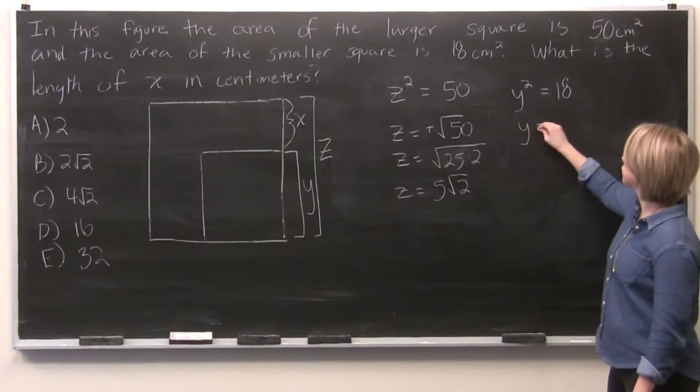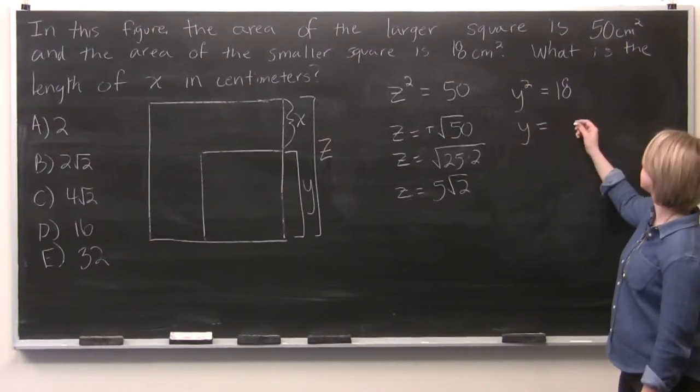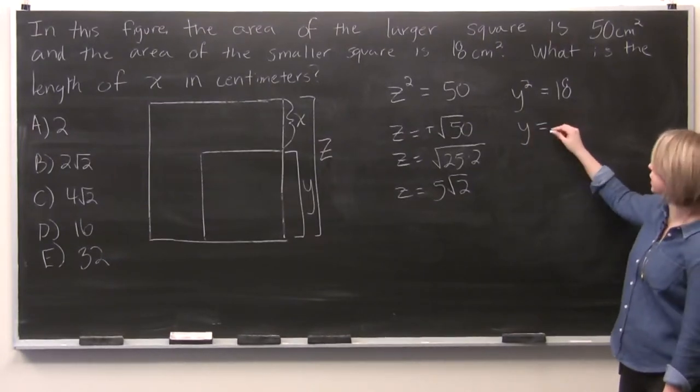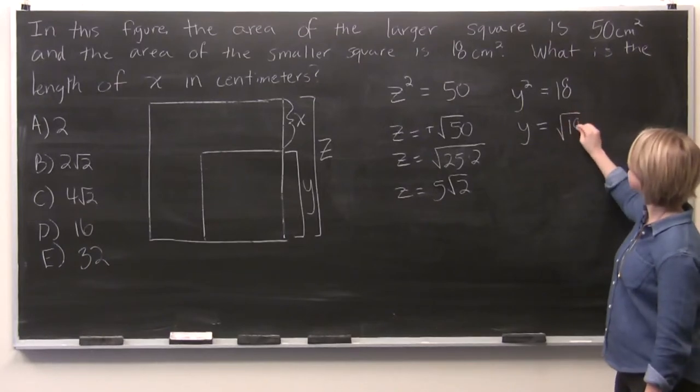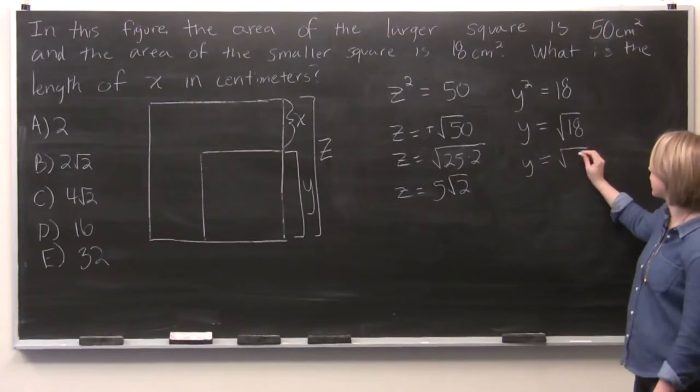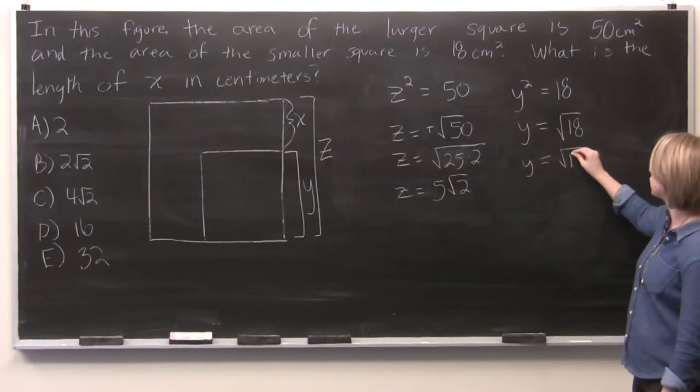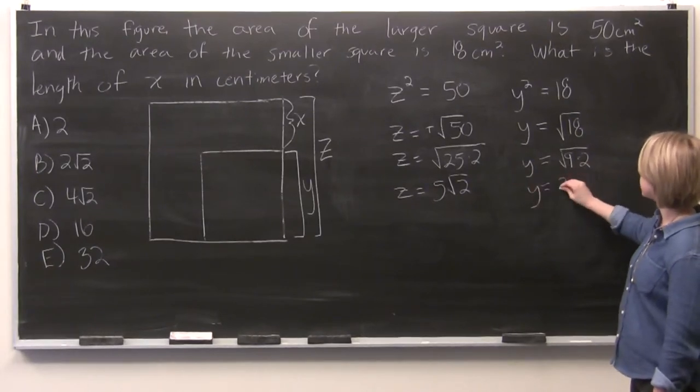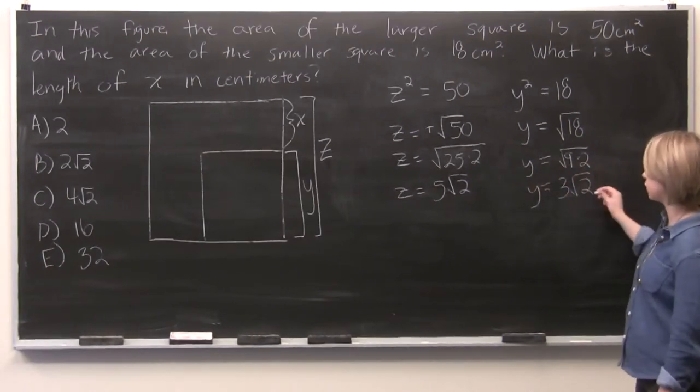And we'll do the same thing for y. Equal to plus and minus the square root of 18, but we can ignore the negative. And we can expand inside the square root. So the square root of 9 times 2. So we'll get that y is equal to 3 times the square root of 2.